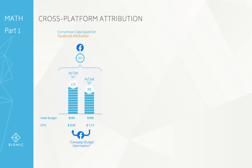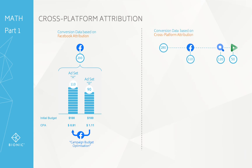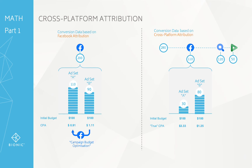Now, if you look at the exact same campaign and same period but from a cross-platform perspective — looking at a data-driven attribution model — Facebook has actually been given credit for contributing to 110 conversions, search 120, and display and video 50. Facebook was involved in more, but in terms of being given a weighting and a credit, it's a different ad set that's driving those different proportions of conversions.